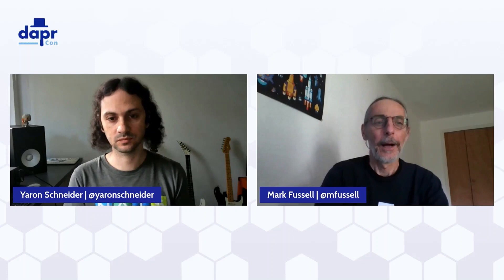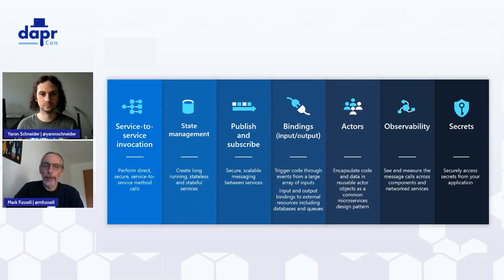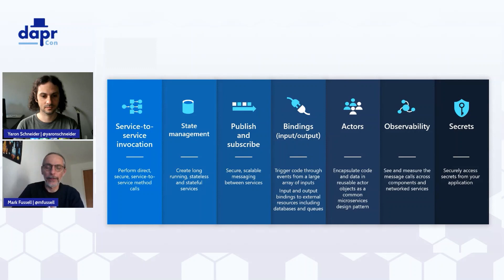Let's now talk about the what of Dapr. Dapr has a set of APIs — building blocks — that include things like service-to-service invocation, publish and subscribe, bindings to interact with external systems, and observability. Rather than talk about every single one of those APIs, let's touch on some of our favorite capabilities, the things that really make developers' lives easy.